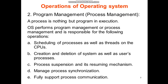The second important operation is program management or process management. Let us clarify the difference between program and process. A process is nothing but a program in execution. Related to processes, the operating system has to perform the following operations: it has to schedule the various processes, create and delete system as well as user processes, handle suspension and resumption mechanisms, manage process synchronization, and also support process communication.